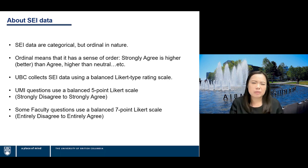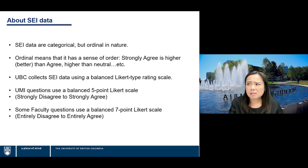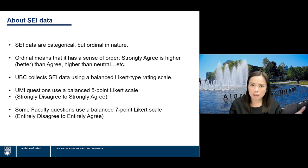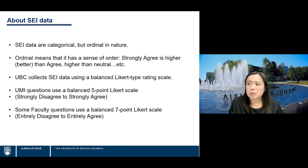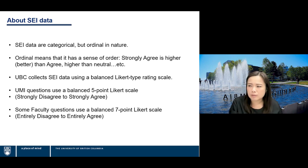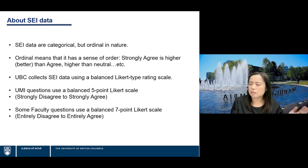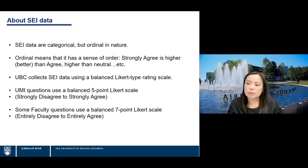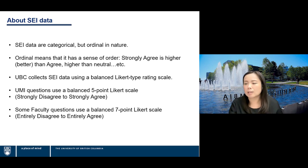SAI data are categorical but ordinal in nature — ordinal meaning they have a sense of order; strongly agree is higher than agree, which is higher than neutral, and so on. UBC collects SAI data using a balanced Likert-type weighting scale. The university module item questions use a balanced five-point Likert scale from strongly disagree to strongly agree. Some faculty questions use a balanced seven-point Likert scale, going from entirely disagree to entirely agree with more response options in between.